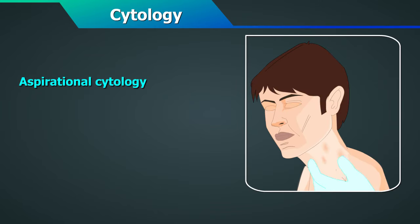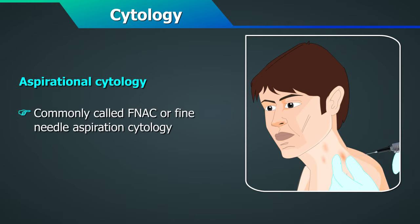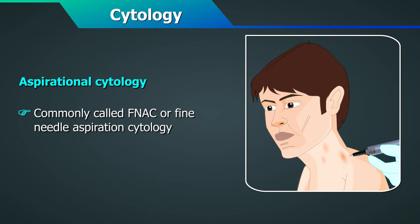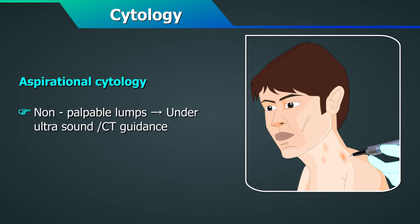Third, aspirational cytology aspirates cells from a palpable lump or mass anywhere in the body using a needle with or without suction. It is commonly called FNAC or Fine Needle Aspiration Cytology. It can be done directly for palpable lumps or under ultrasound or CT guidance for masses which are not palpable.